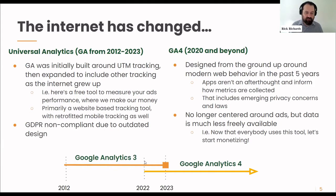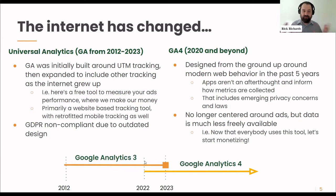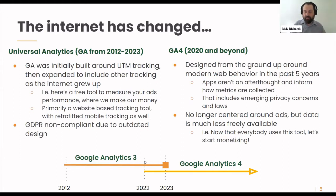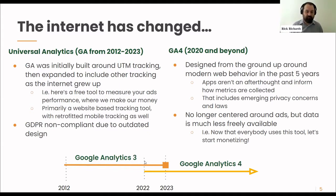Google Analytics, Universal Analytics, was initially built as a tool to measure UTM tracking. Basically, you could see how well your ads performed, because Google wanted you to pay them more money to run ads. Then more and more people started using it and it became a more holistic tool, but it was still based around how people used the internet a decade or more ago — it was a website-based tracking tool.